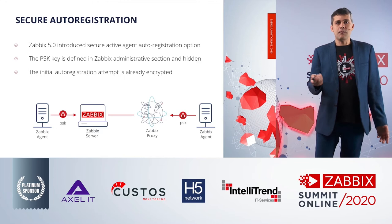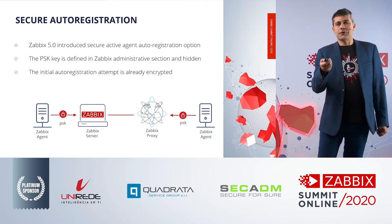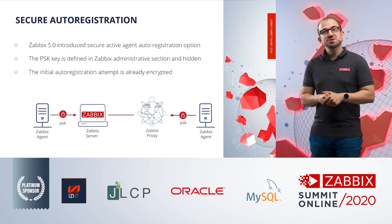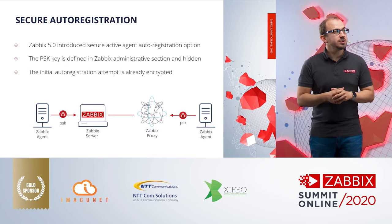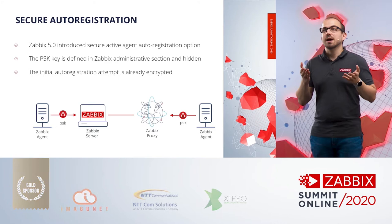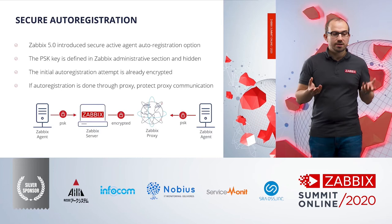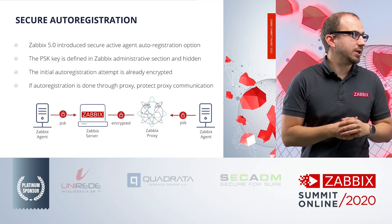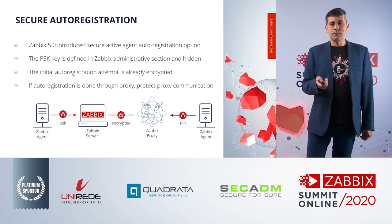Here's an example architecture with a Zabbix server, proxy, and agent auto-registering using PSK. But something is missing: there is no encrypted connection between the Zabbix server and Zabbix proxy. Without that encryption, the proxy and server exchange all data collected by agents — including keys — making them vulnerable. Make sure to protect all communications before proceeding with securing agents or other things.